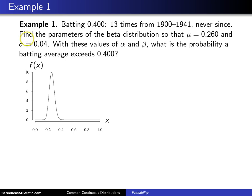So the way I formulated this problem is find the parameters of the beta distribution so that the population mean will be 0.260 and the population standard deviation will be 0.04. When you use these parameters for alpha and beta, what is the probability that a batting average will exceed .400?